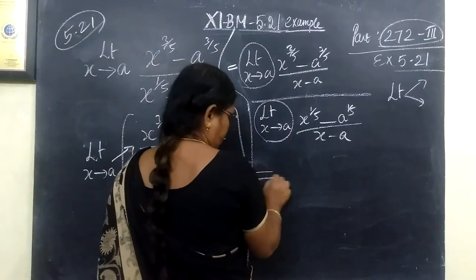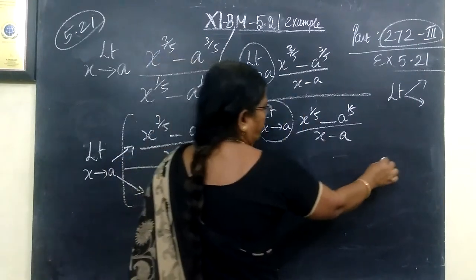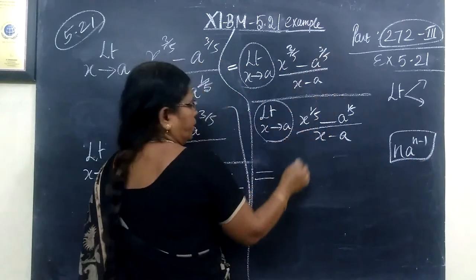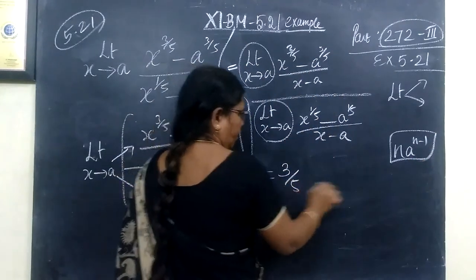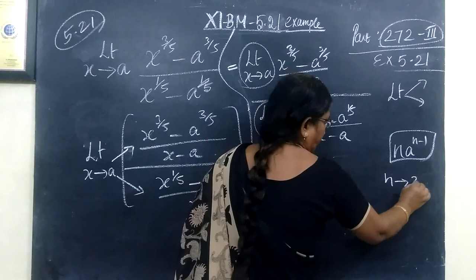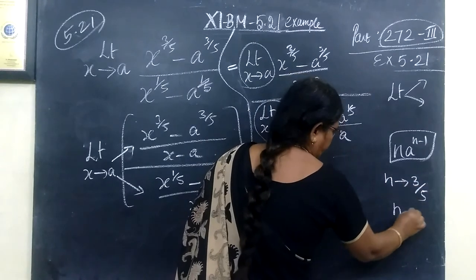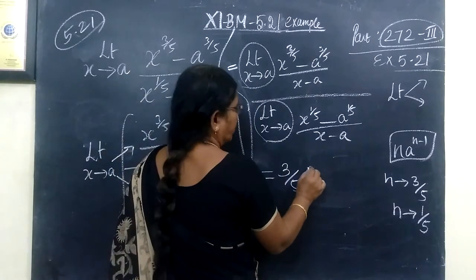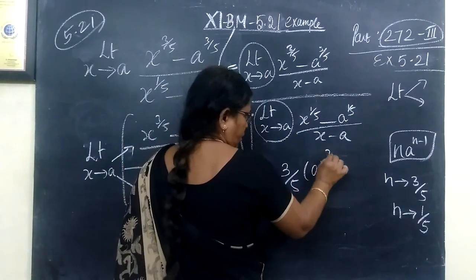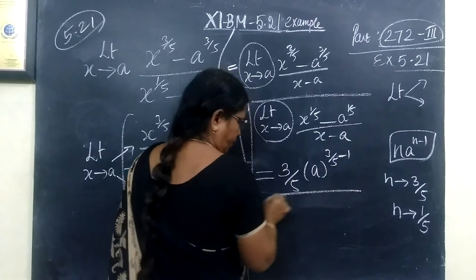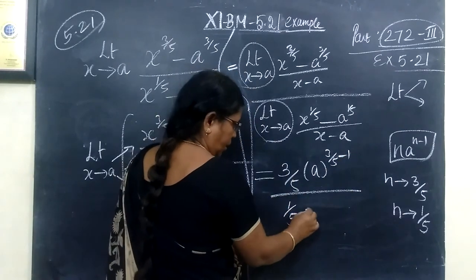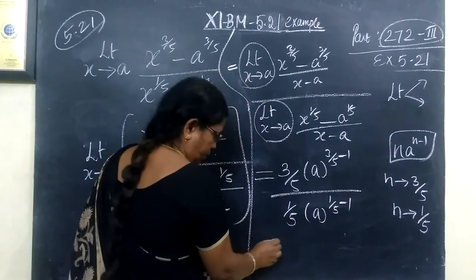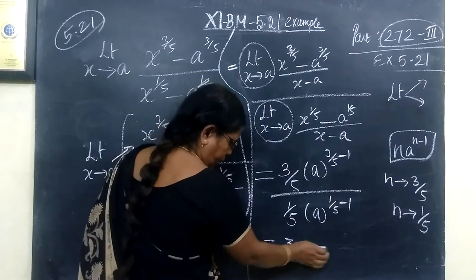Now we apply the formula n · a^(n-1) to each part. For the numerator, n = 3/5, giving us (3/5) · a^(3/5 - 1). For the denominator, n = 1/5, giving us (1/5) · a^(1/5 - 1). So the result is [(3/5) · a^(3/5-1)] / [(1/5) · a^(1/5-1)].